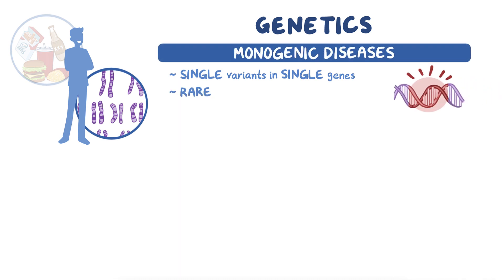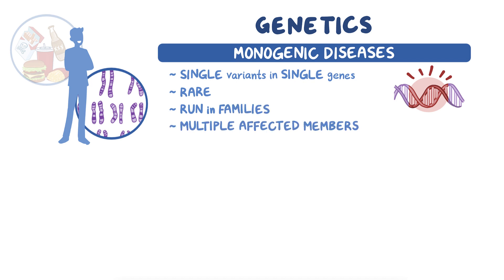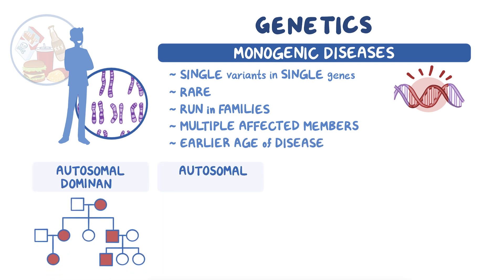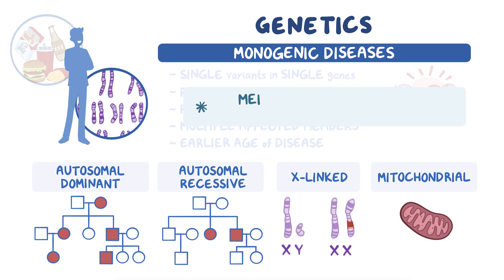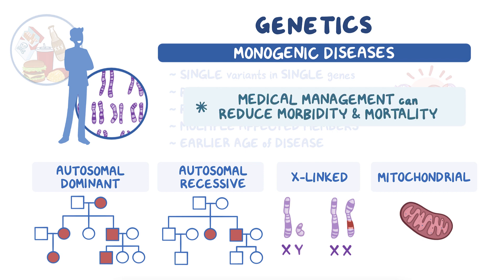Monogenic diseases run in families in predictable patterns and tend to have multiple affected members and earlier age of disease. These inheritance patterns include autosomal dominant and recessive, X-linked, and mitochondrial. Monogenic conditions are important to recognize since medical management guidelines can greatly reduce morbidity and mortality.